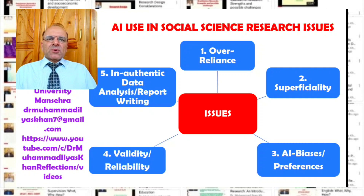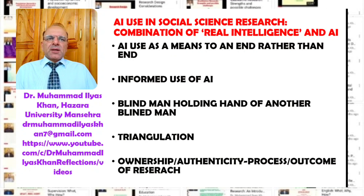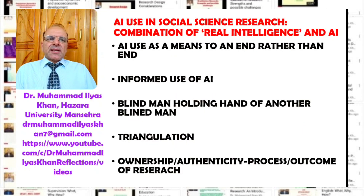So how can we make good use of AI in social science research? It should be a balanced, good combination of human intelligence and artificial intelligence — a good balance of human-machine interaction. AI should be used as a means to an end rather than an end in itself.